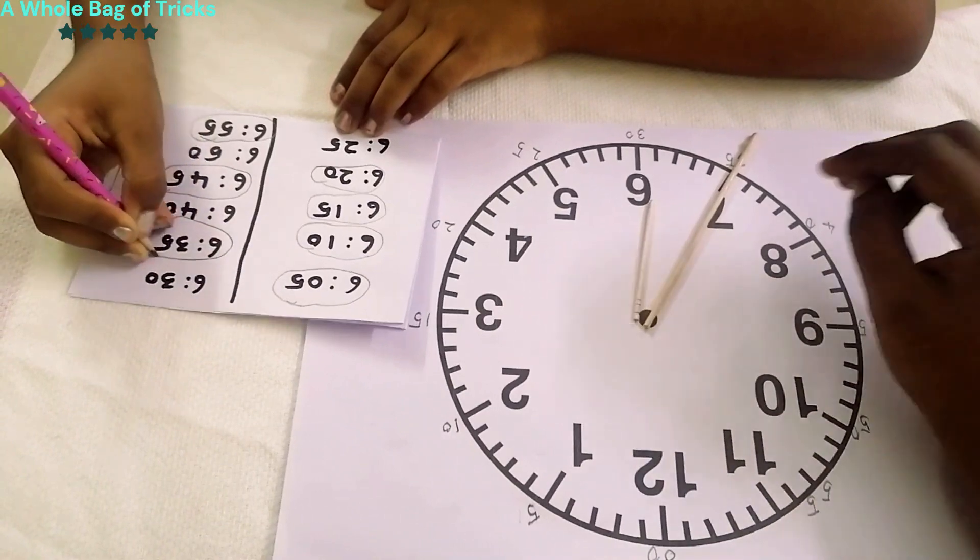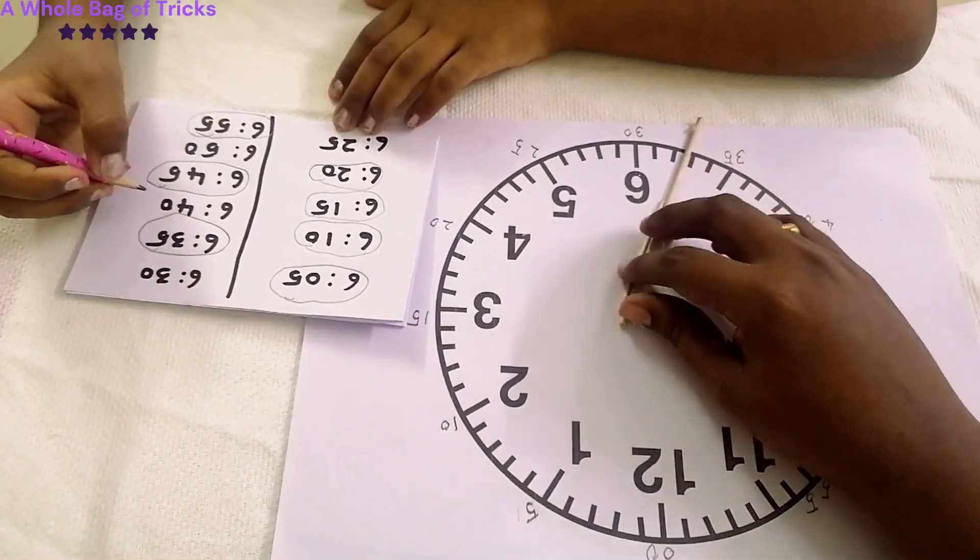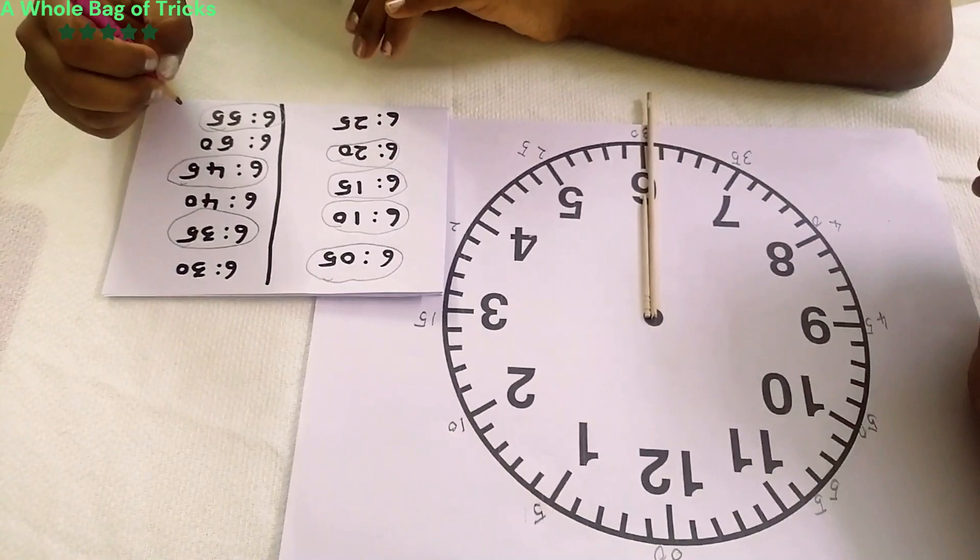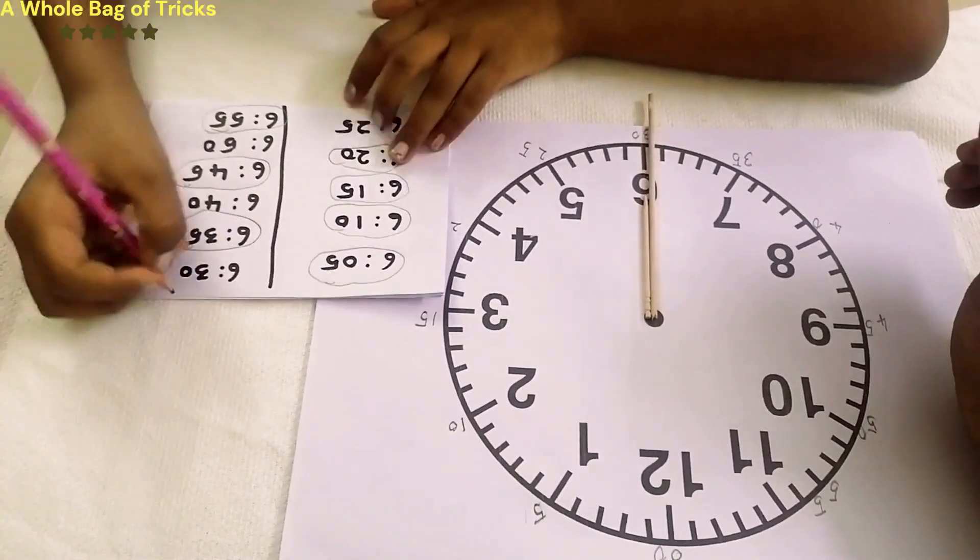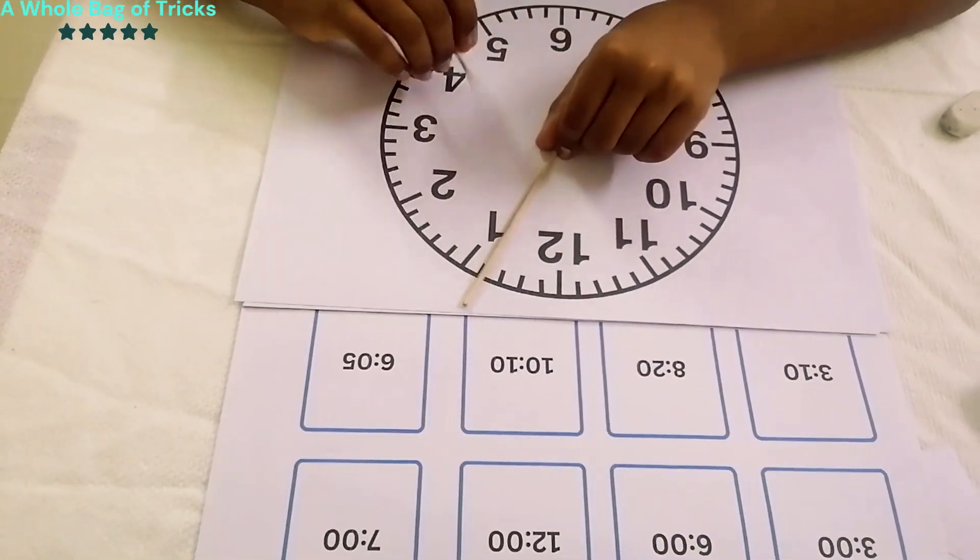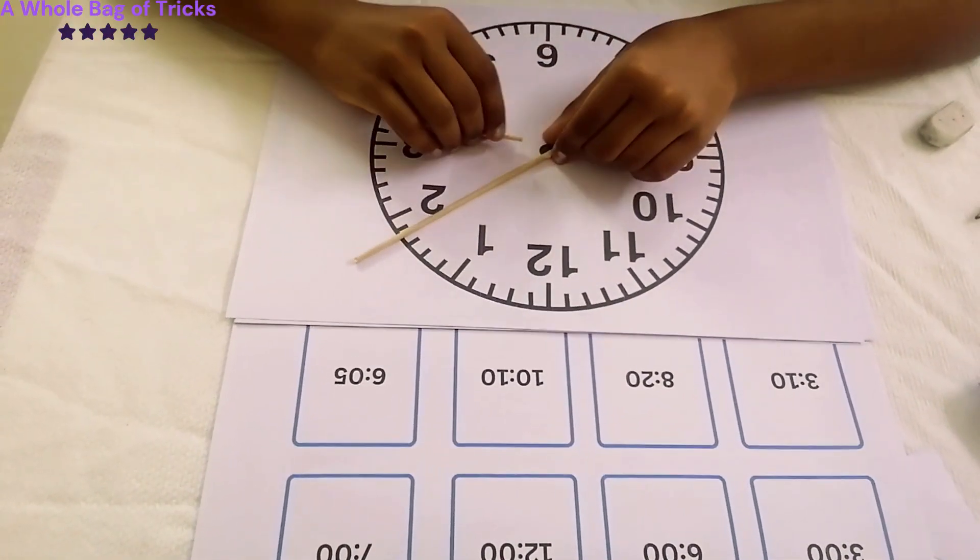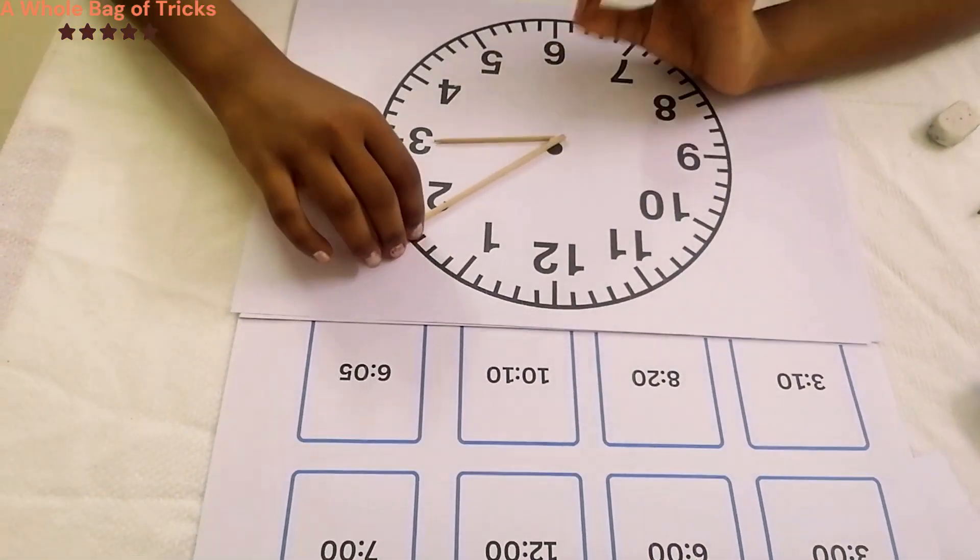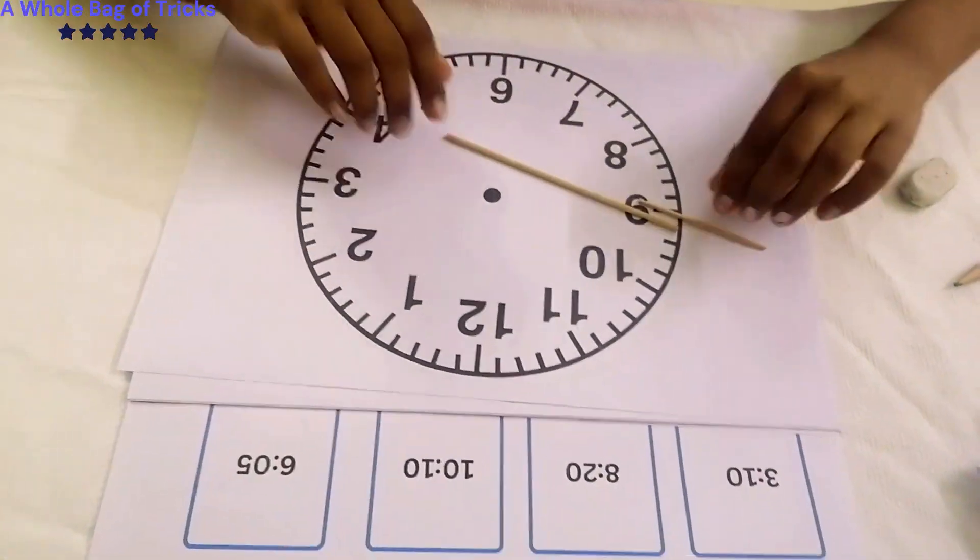Now make sure to repeat this step until your kid is able to see the numbers on the clock face and calculate the minutes based on the numbers. If the minutes hand is near 8, 8 into 5 is 40. So it's 40 minutes. If your kid is able to do like this, your kid is ready for the next step.